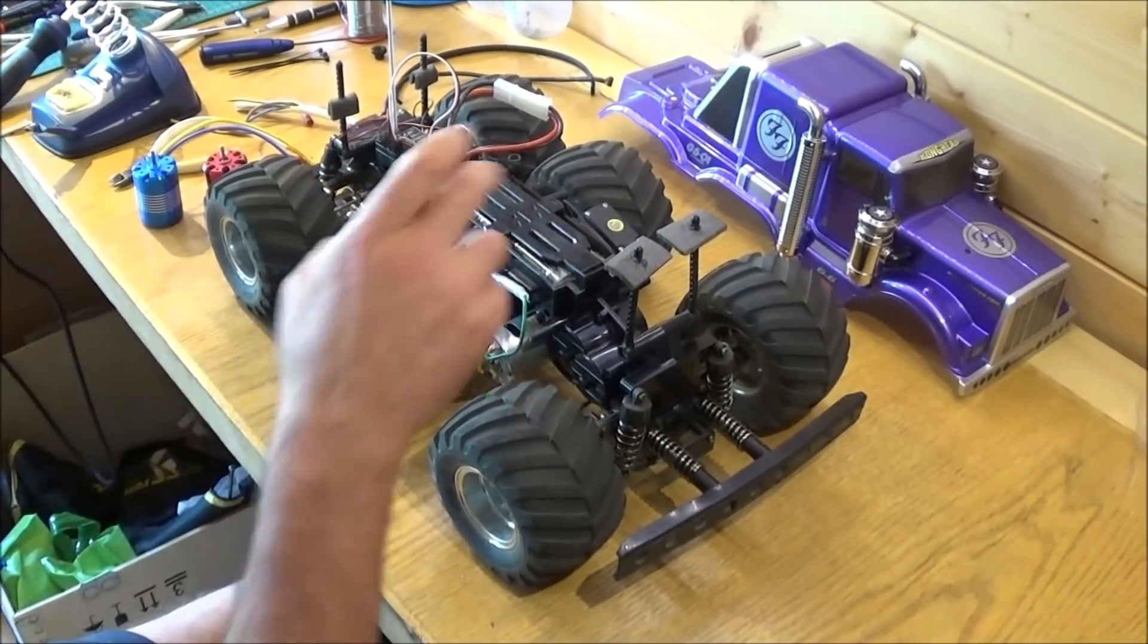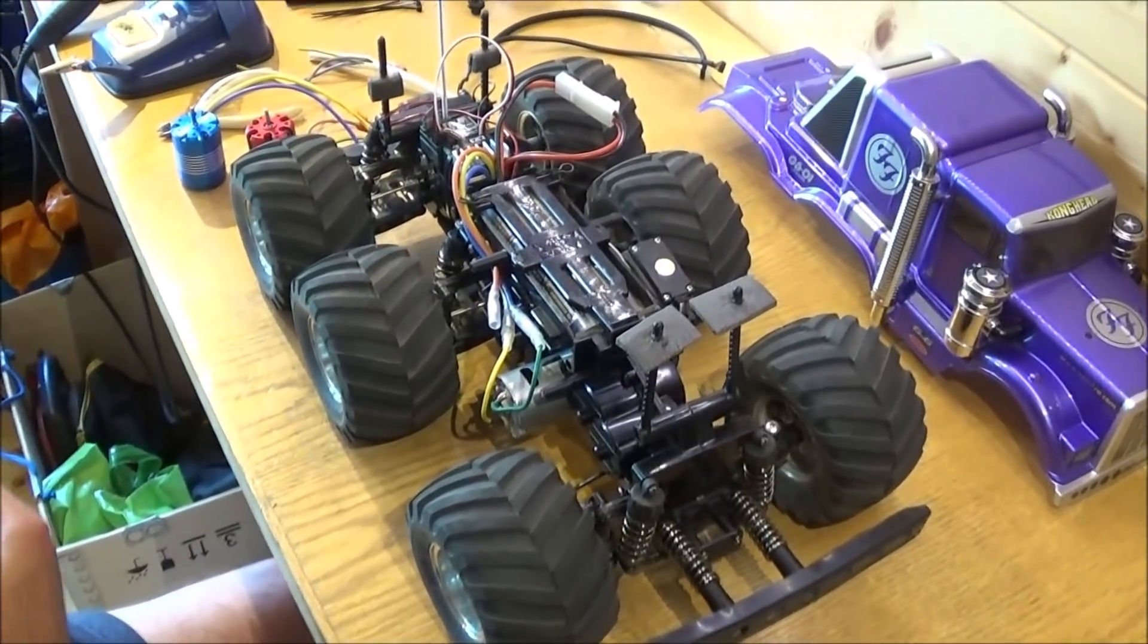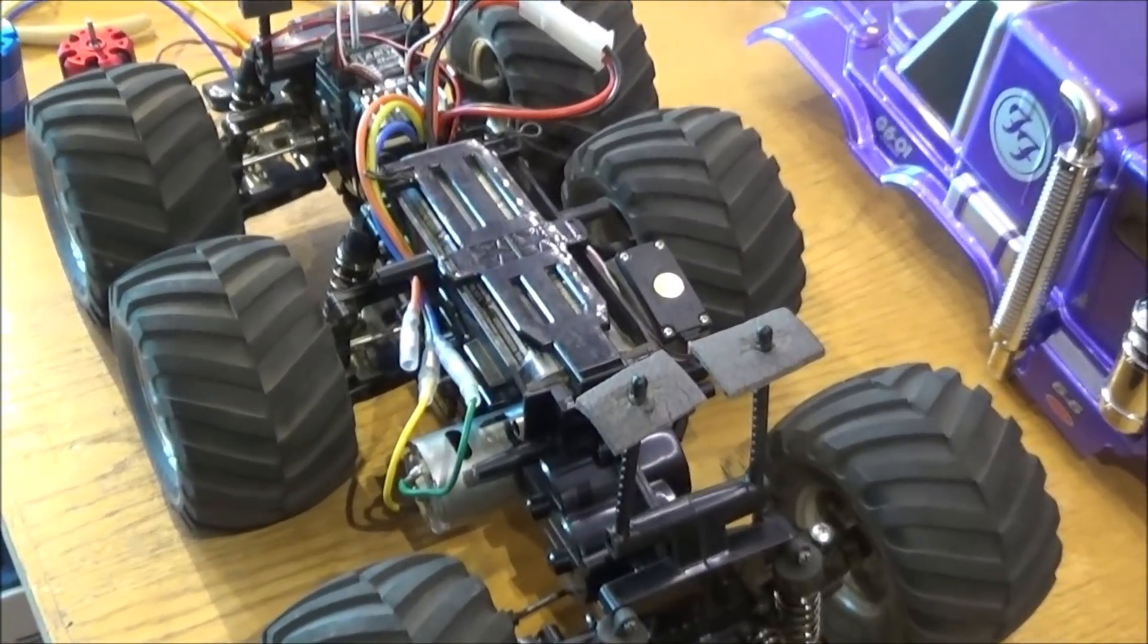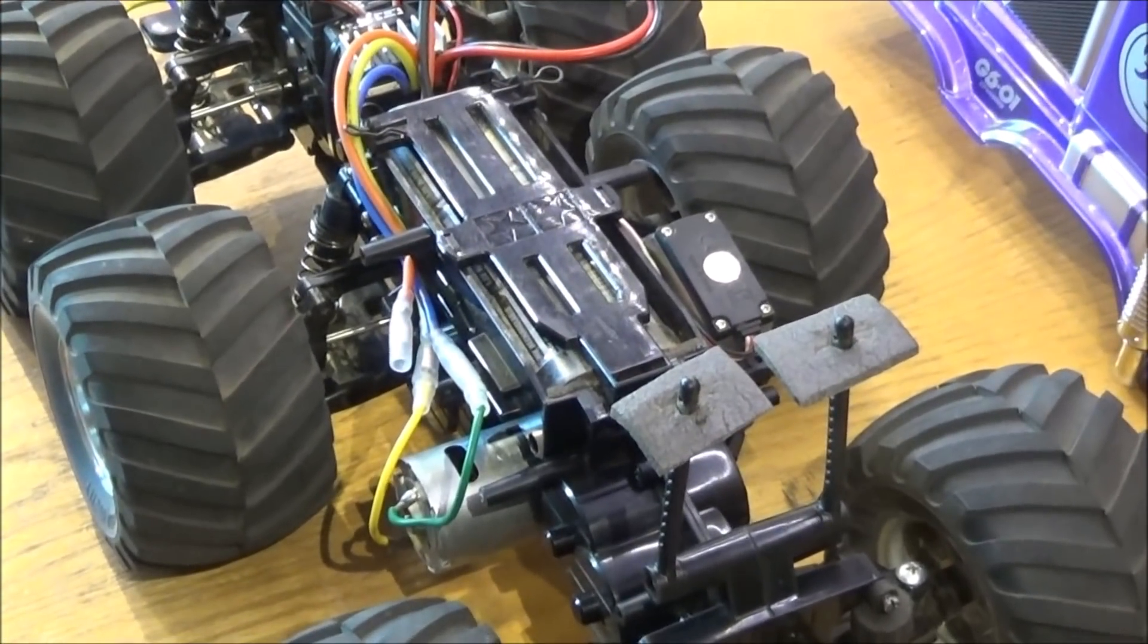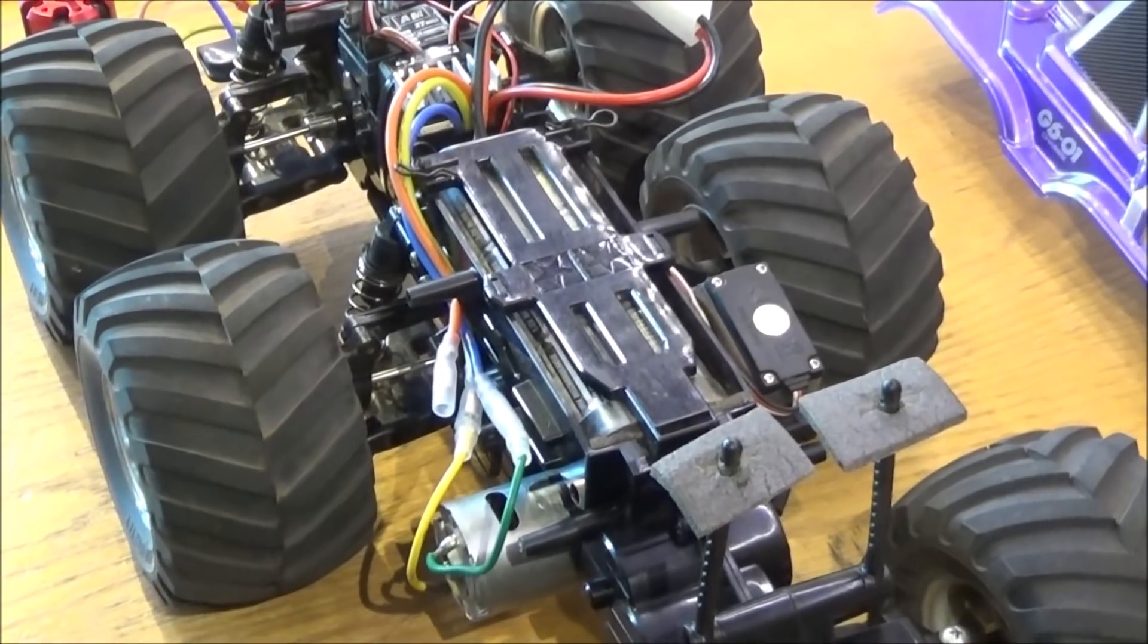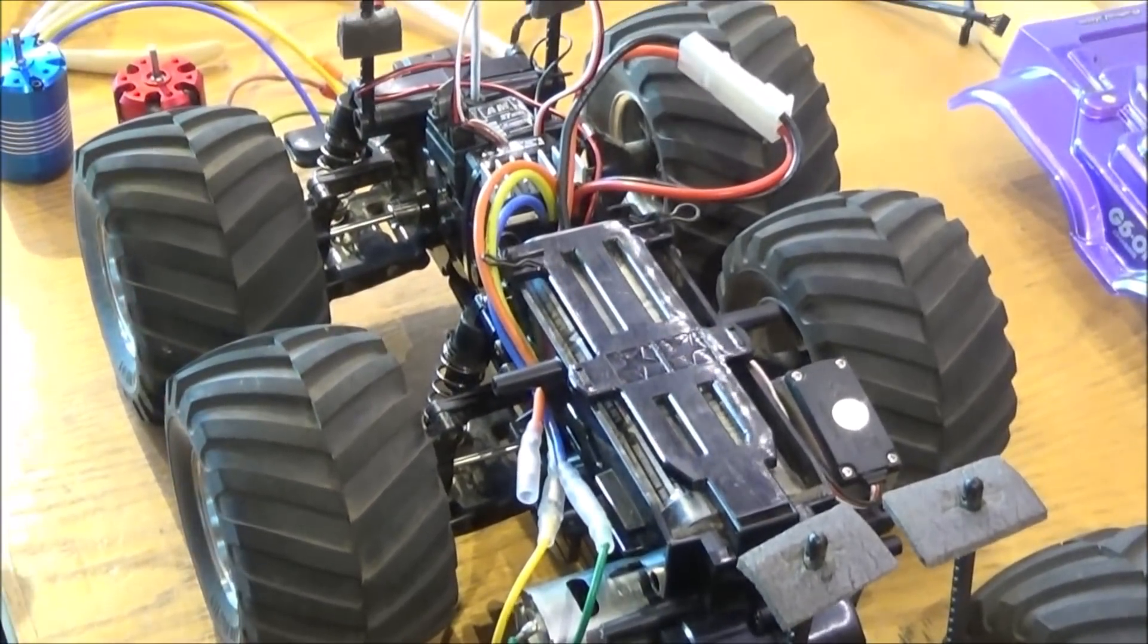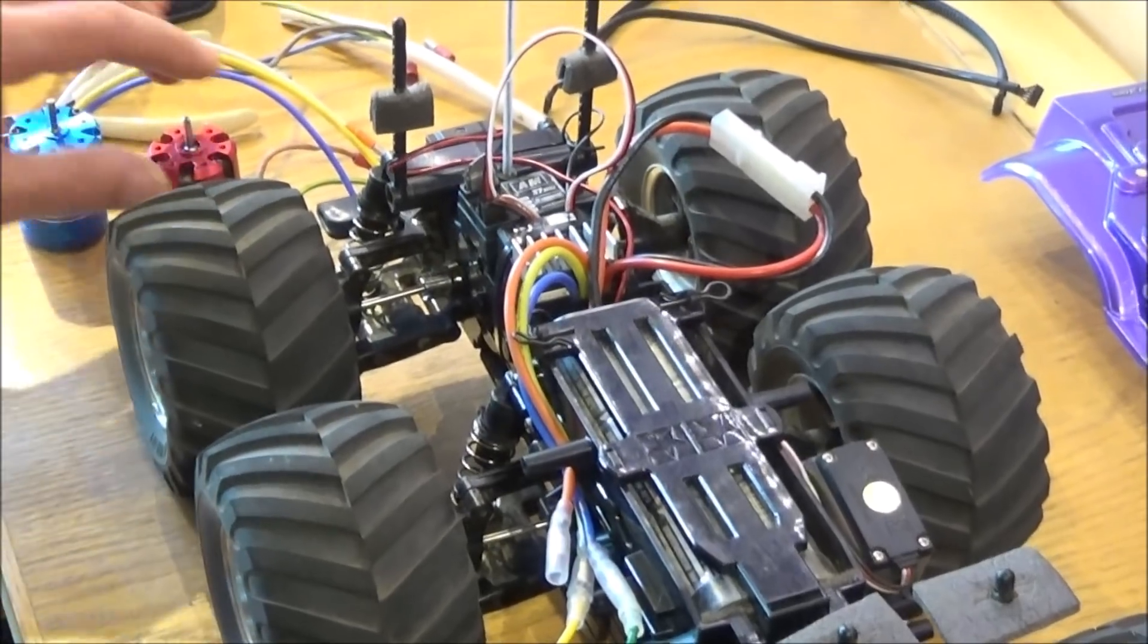It's good fun, but if you're running the standard 7.2 volt nickel metal hydride, then it doesn't really give enough punch and top speed is a bit lacking. We need to get a few revs in there, so the cheapest and best way is to go for a 13.5 or lower brushless sensor motor.